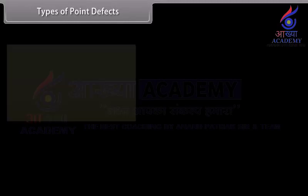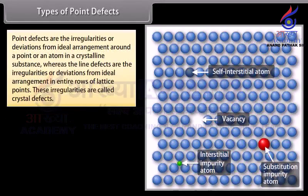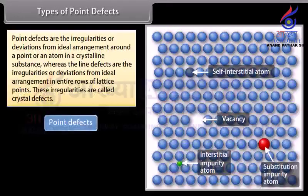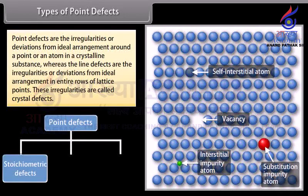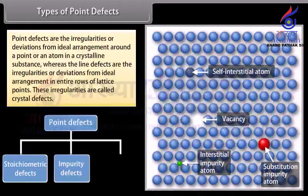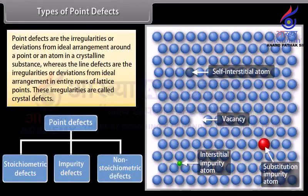Types of point defects: Point defects are irregularities or deviations from ideal arrangement around a point or an atom in a crystalline substance, whereas line defects are irregularities in entire rows of lattice points. These irregularities are called crystal defects. Point defects can be classified into three types: 1. Stoichiometric defects, 2. Impurity defects, and 3. Non-stoichiometric defects.